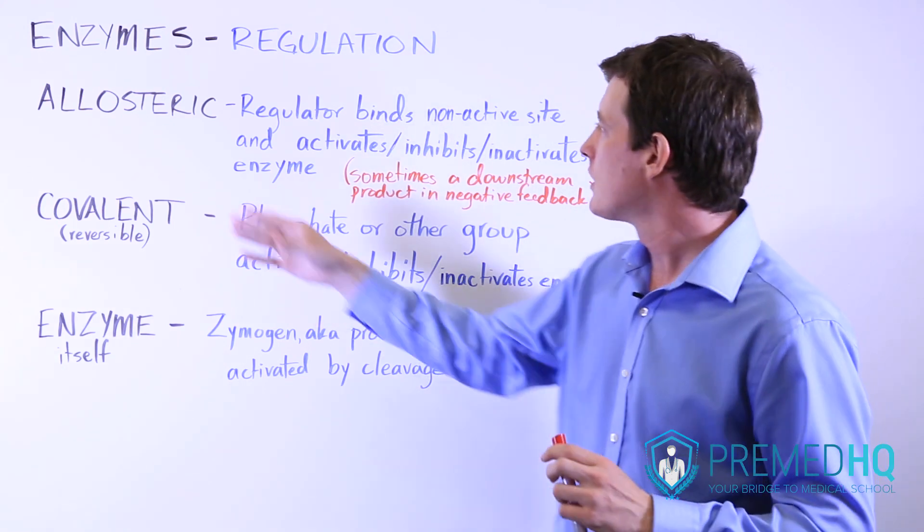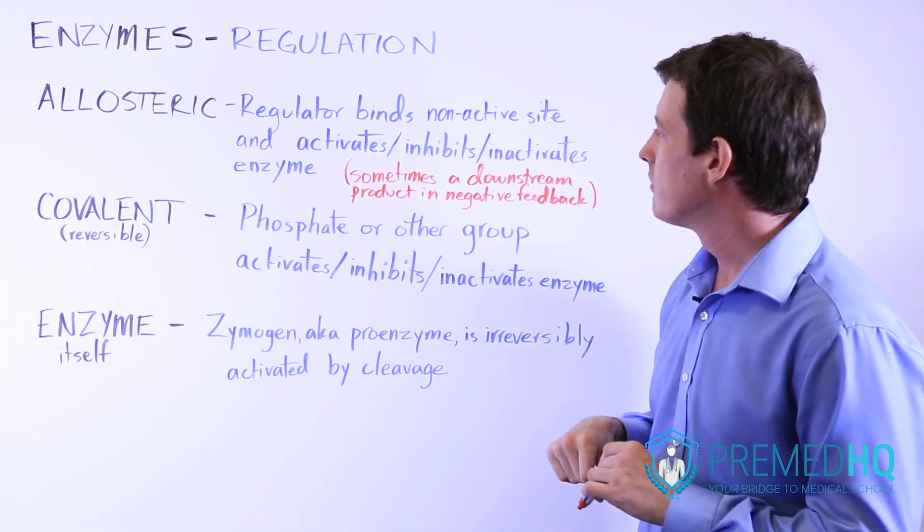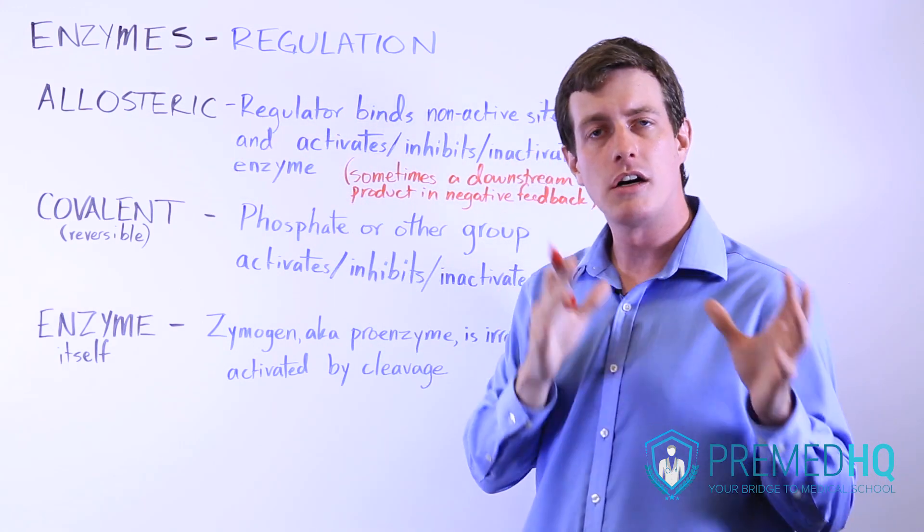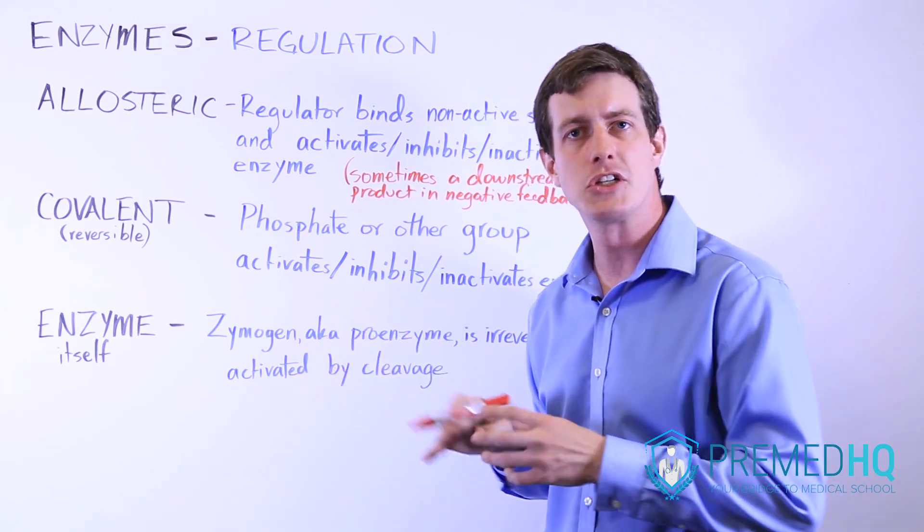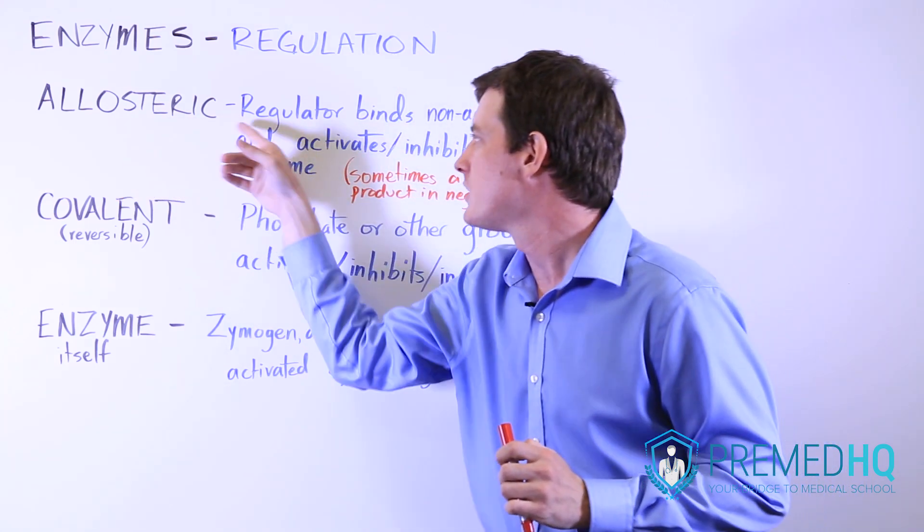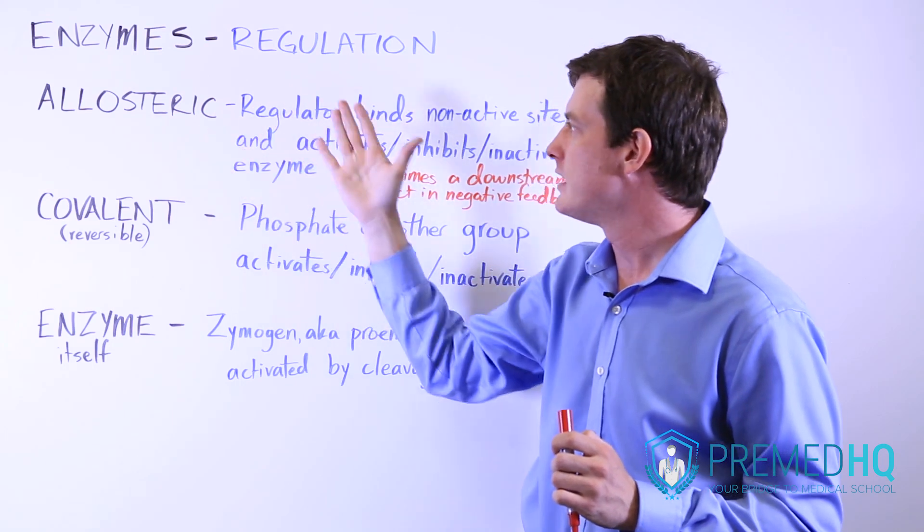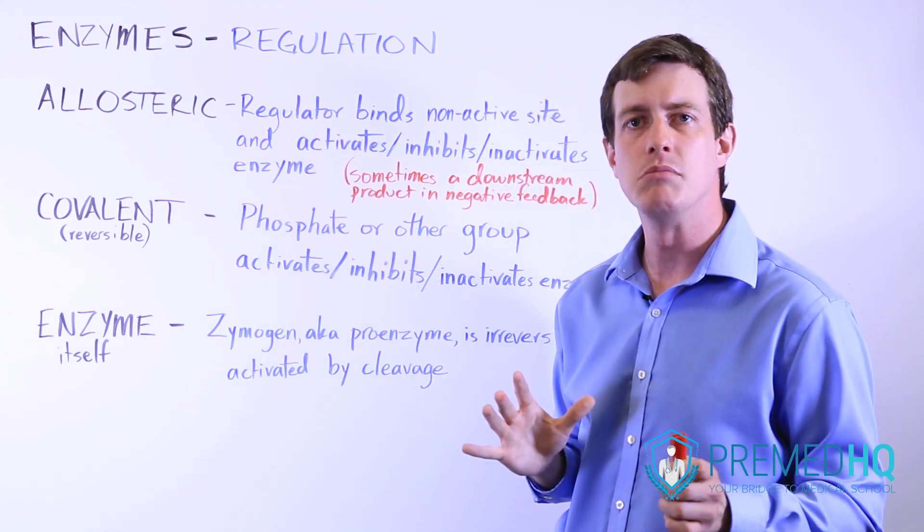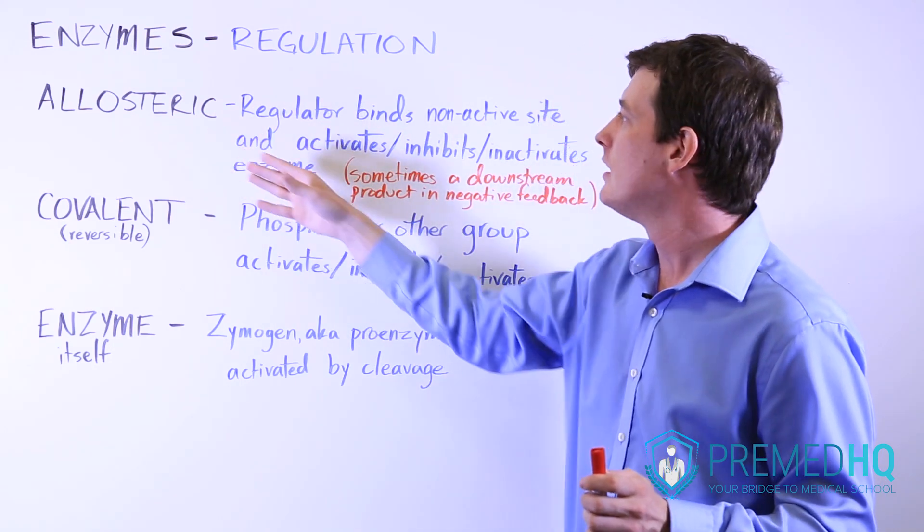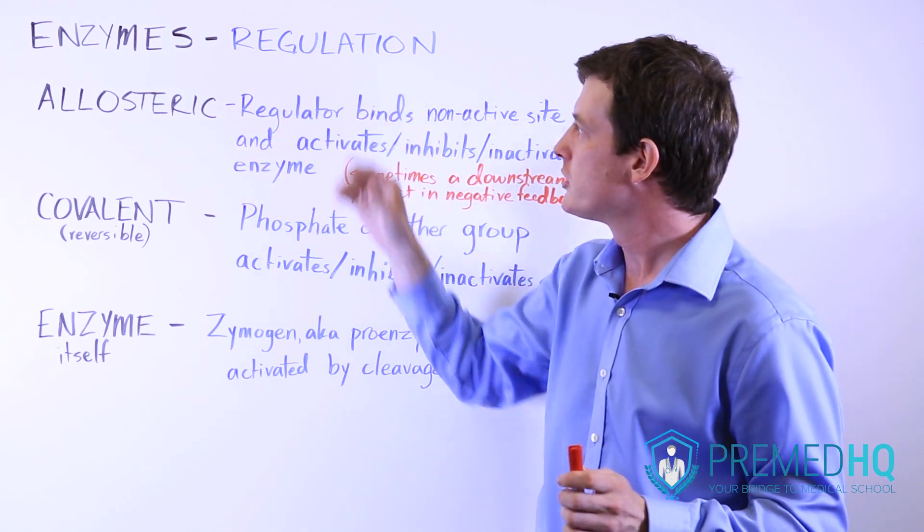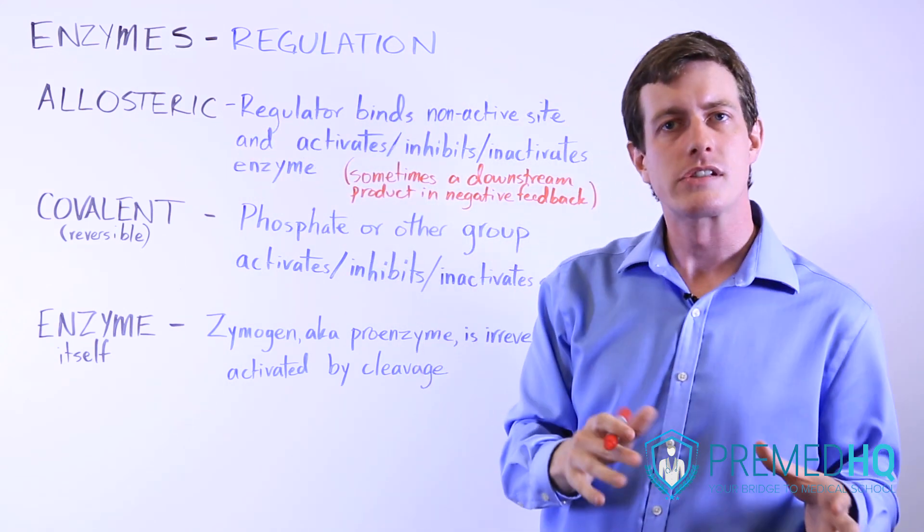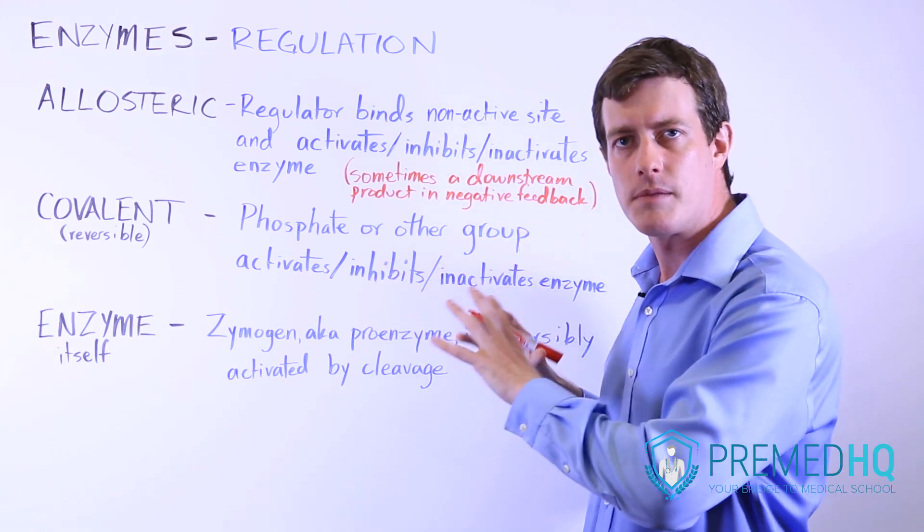So first we'll start with allosteric regulation. Allosteric regulation, remember, in contrast to competitive inhibition, you have non-competitive inhibition. You might see allosteric regulation listed as a type of non-competitive inhibition, and the reason is that the regulator in allosteric regulation is not in the active site, but instead at some other site on the enzyme.